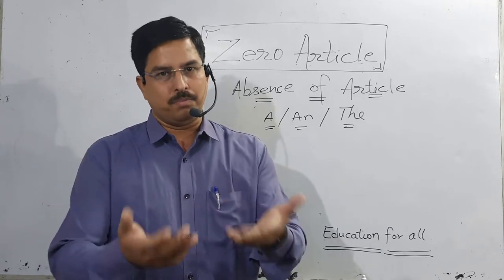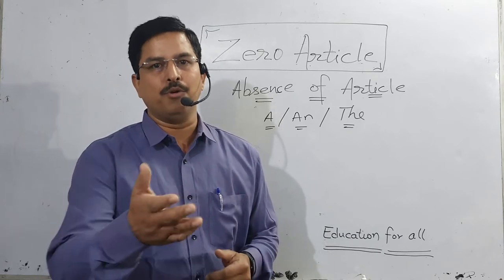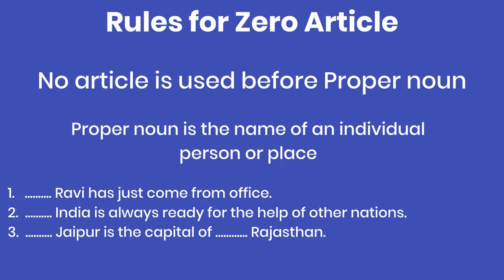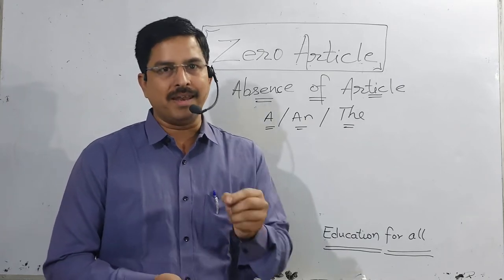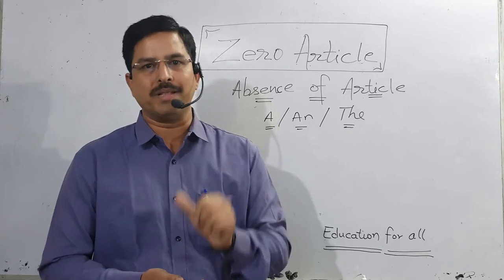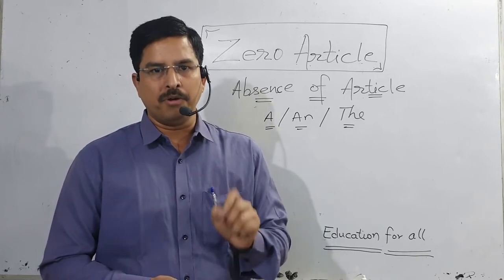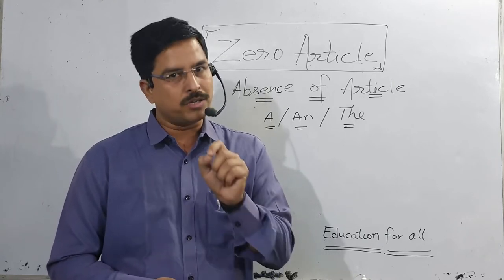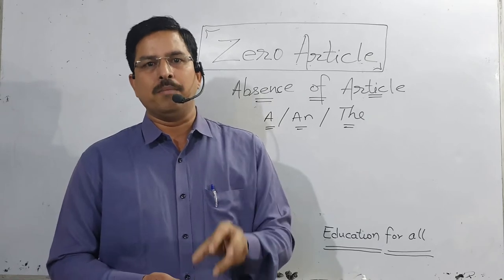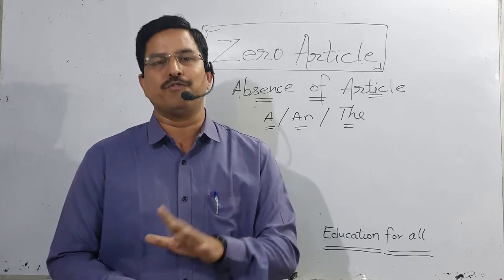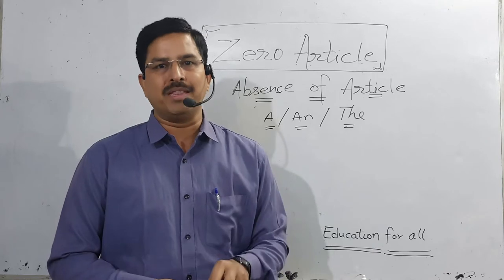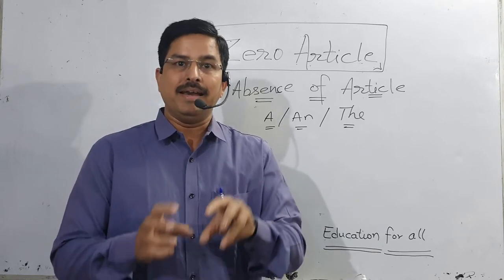Let's look at the first rule. The first rule is that you do not use any kind of article before a proper noun. A proper noun is the first name of a person, place, thing, emotion, or state. A noun is of five types, and proper noun is one of them — the individual name is the proper noun.